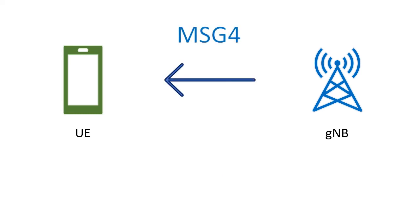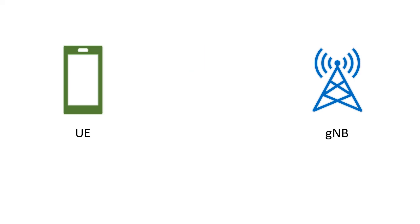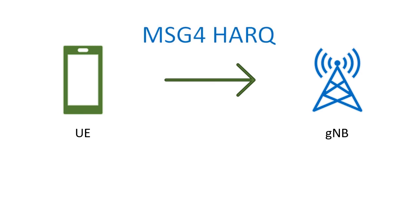Then the gNodeB sends Message 4, which is the RRC Setup message. This includes the contention resolution, meaning the random access procedure was successful. Upon decoding Message 4, the temporary C-RNTI is set as the C-RNTI, since network identifiers change across different stages. After successfully reading Message 4, the UE sends the HARQ feedback for Message 4. If successful, it sends ACK; if not, it sends NACK.